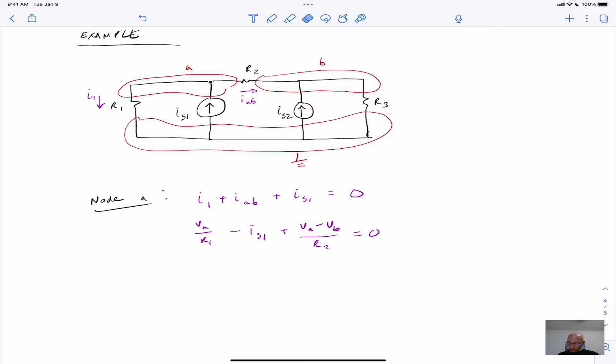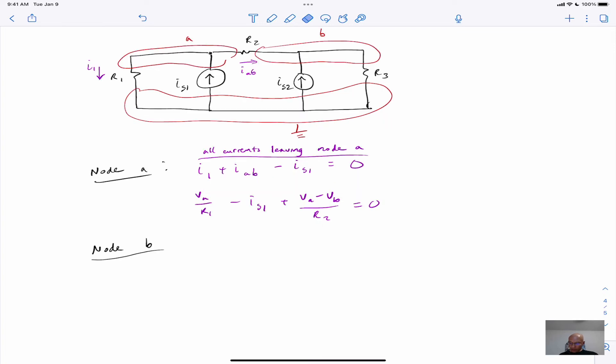And I can see I made an error here. I_S1 should show up as a negative because I'm tracking here all currents leaving node A. So in order to be correct, I have to treat all the currents consistently. Now we can do an equation for node B. So for the currents leaving node B, we have...